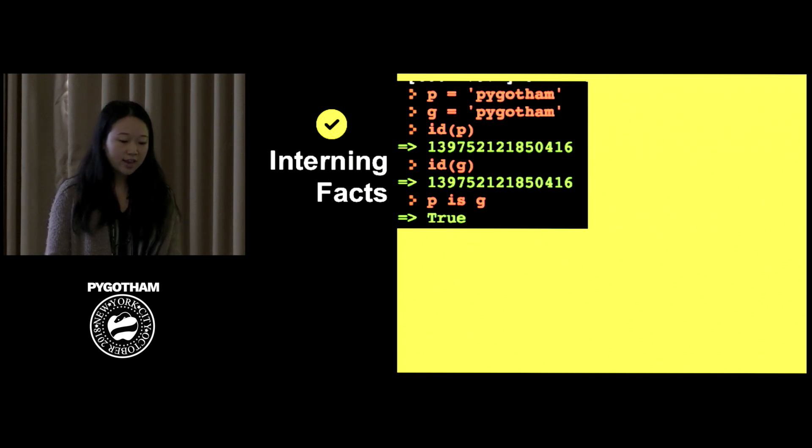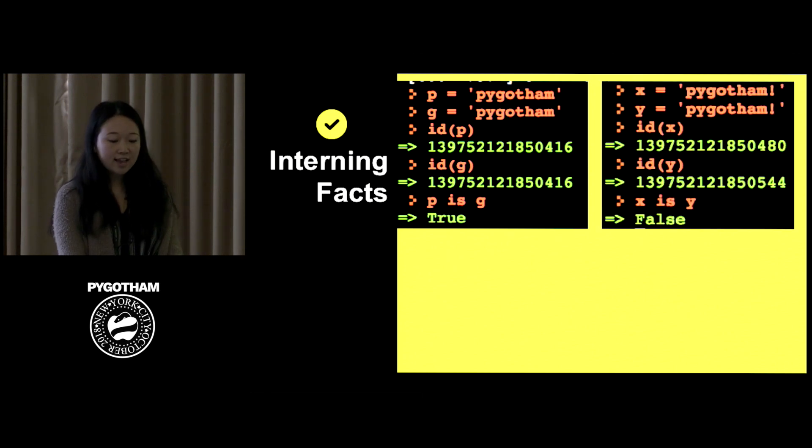So for instance, if I assign P and G to PyGotham, you can see that it falls under the range of those characters. So if I check the ID method, which is how you can find the memory location of an object in Python, you'll see that they're the same. So if I look at P is G, that will evaluate to true. However, if I change this example a little bit and add an exclamation point, like for X and Y, you can see now that if I use the ID method once again, they're not pointing to the same memory location. You can see that X ends with zero, Y ends with four. So if I look at X is Y, now that will evaluate to false.